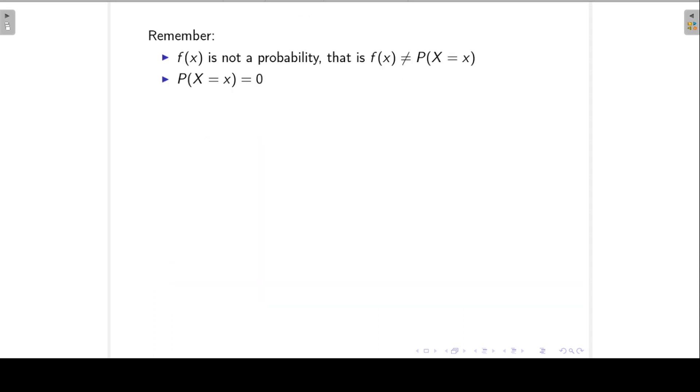Remember that the density function, f of x, is not a probability. So f of x is not the same as the probability that my random variable x takes on a specific value, like for the discrete probability distribution. And the probability that a continuous random variable will take on a specific value is equal to 0.